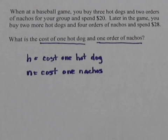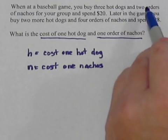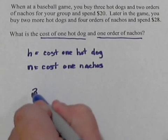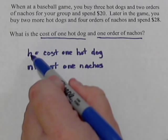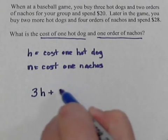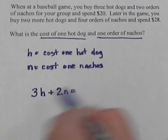If we have two variables we need to find, we need two equations. The first trip, you bought three hot dogs and two orders of nachos, so three hot dogs at the price of one, which would be h, so we multiply that together: 3h. Then two orders of nachos, and we add those costs together, and we know we spent twenty dollars.